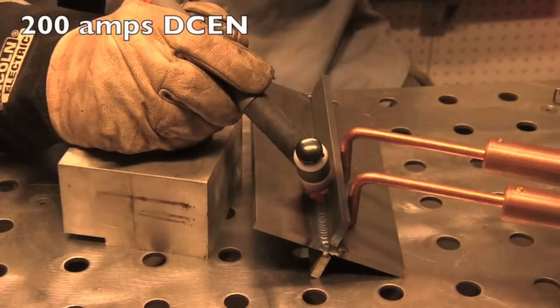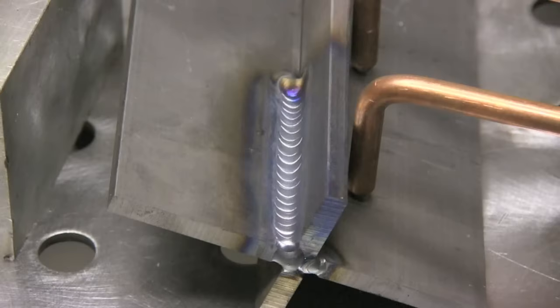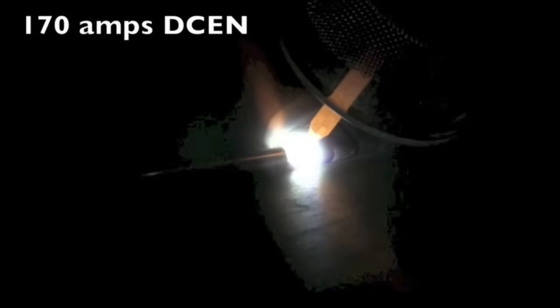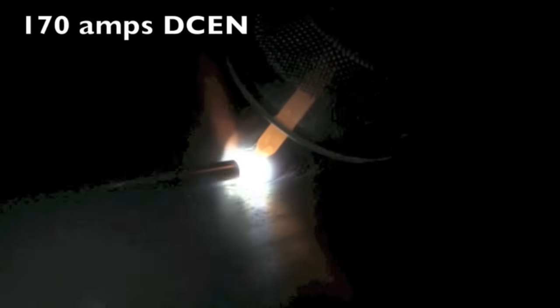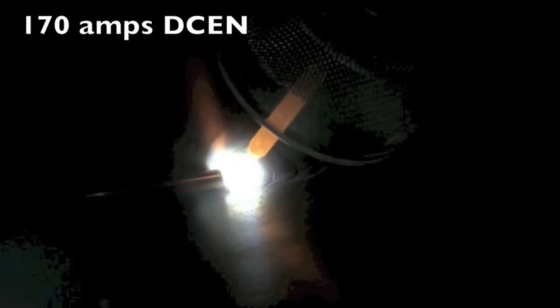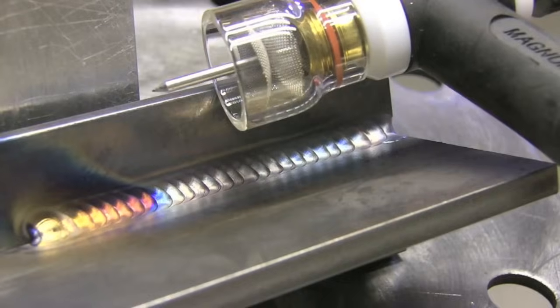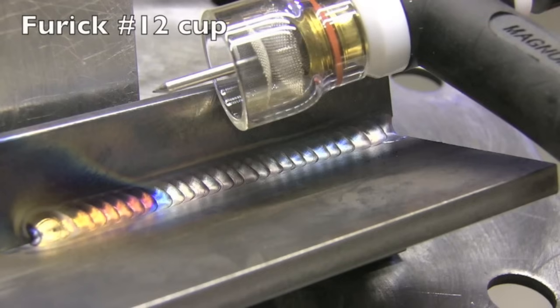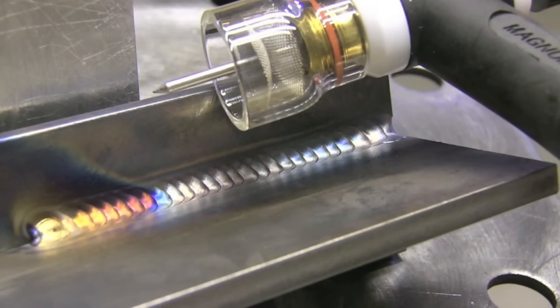I only welded a short run there because this is a 150 amp 17 style torch, so it's going to heat up if I weld very long at 200 amps. I did crank it back to 170 amps and welded for a good bit longer. Most steel, no matter how thick it is, you can weld it at about 170 amps—just use multiple passes if you need more weld size on it.